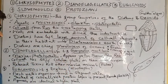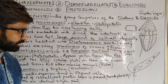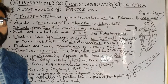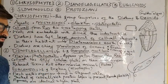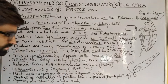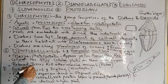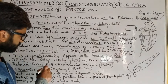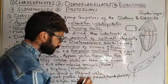When dinoflagellates are abundant they cause red tides. They have stiff hard cellulose plates present on their outer surface. An important characteristic of dinoflagellates is toxin release — they release toxic chemical substances that are very lethal.